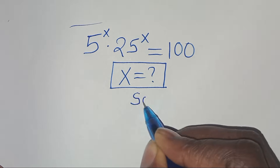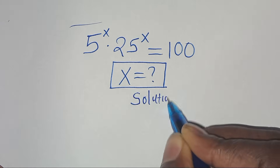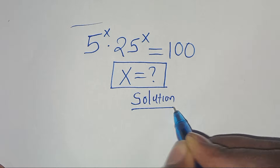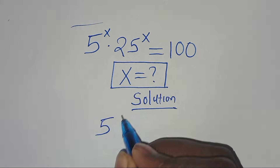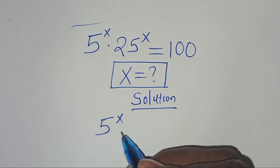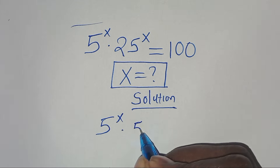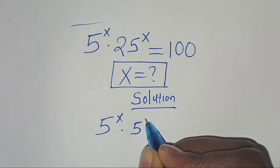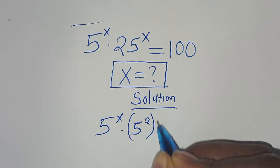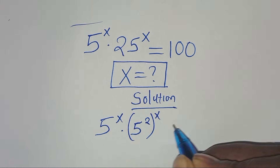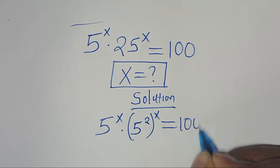Let's provide a solution. We have 5 to the power of x multiplied by 25, which we can express as 5 to the power of 2, raised to the power of x, and this is equal to 100.